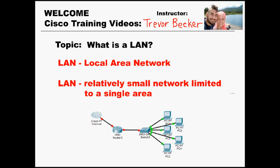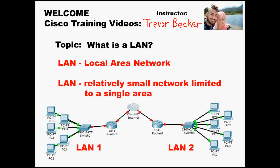Take a moment to look at the diagram that I drew up below. This is an example of a LAN. If PC0 wanted to communicate to PC2, this can happen without the use of the internet. Since they're located on the same LAN, PC0 is able to directly talk to PC2 through the use of the upstream switch.